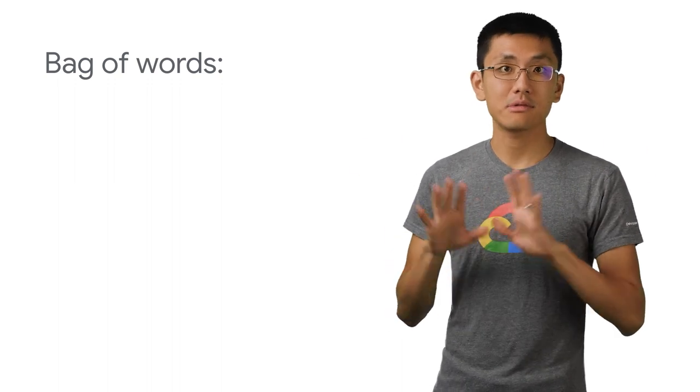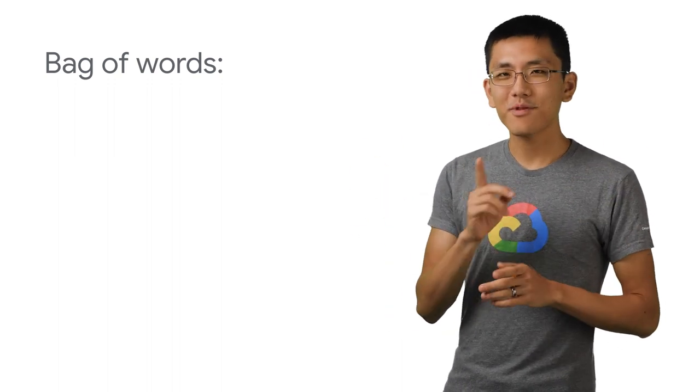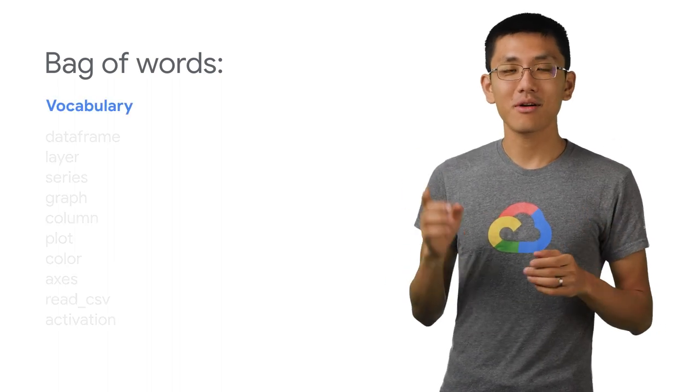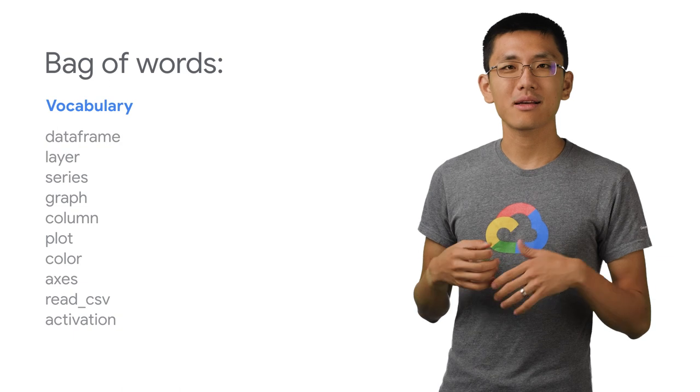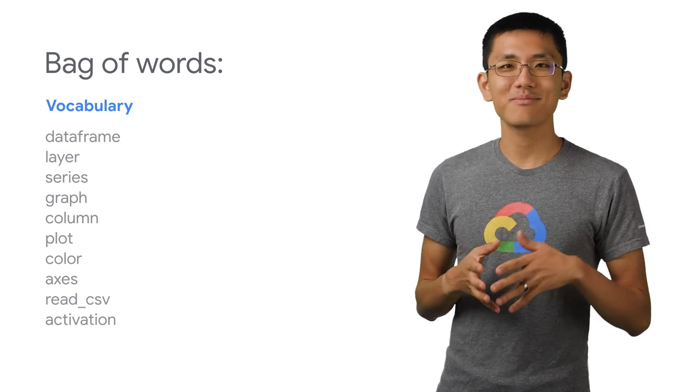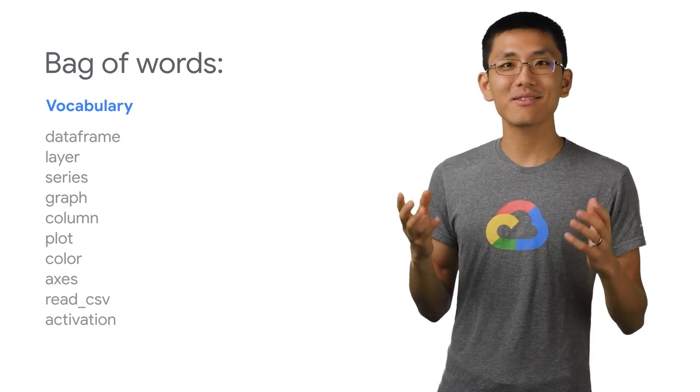Let's pretend for a moment that we're learning English for the first time ever. And for some reason, the first words we have chosen to learn in our entire vocabulary are these 10 shown here, words like data frame and graph, plot, color, and activation.